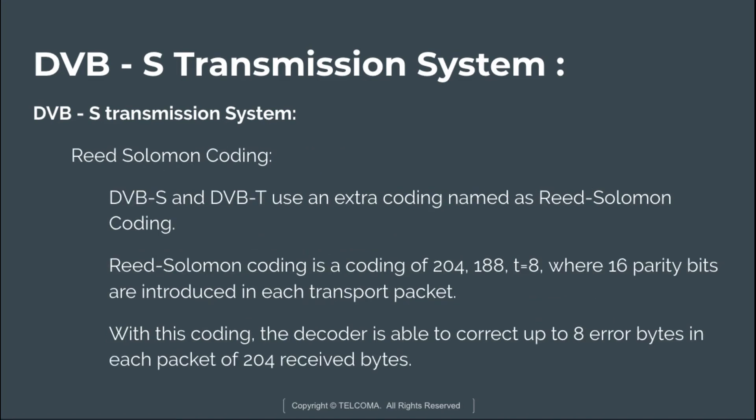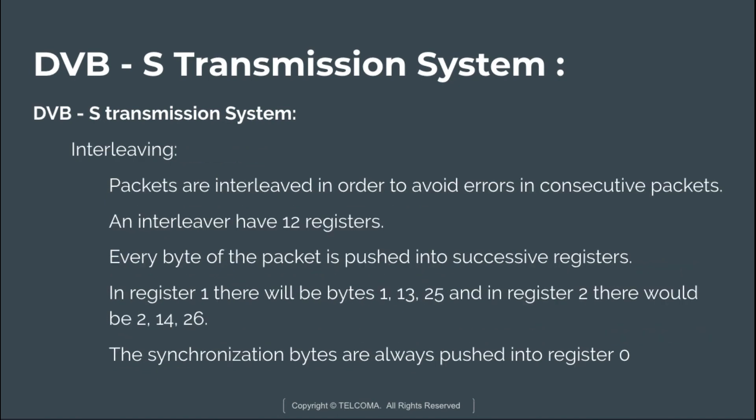Next is Reed Solomon coding. In every DVB standard, external coding is used, and DVB-S uses Reed Solomon coding specifically because satellite and terrestrial communications are more prone to errors. This coding is RS(204, 188) with t = 8, where 16 parity bits are introduced into each transport packet. With this coding, the decoder is able to correct up to 8 error bytes in each received packet of 204 bytes.